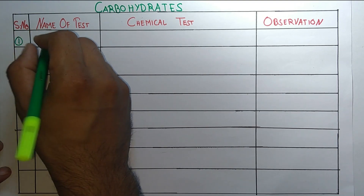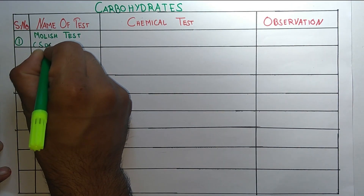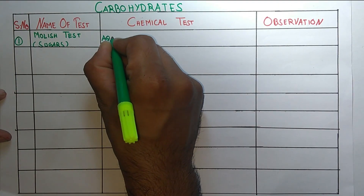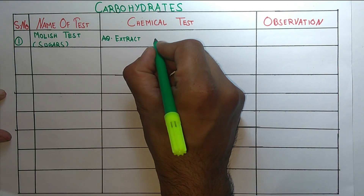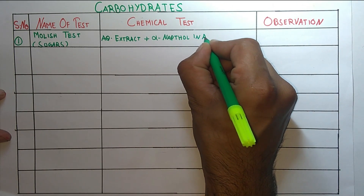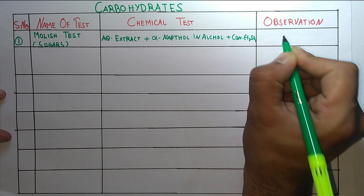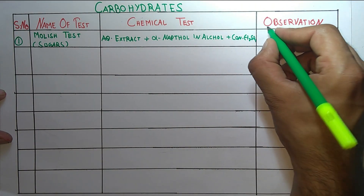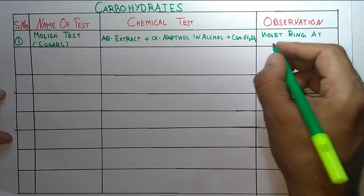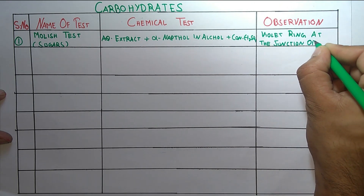The first test is the Molisch test, which is for general sugars. The procedure is: take the aqueous extract plus alpha-naphthol in alcohol plus concentrated H₂SO₄. The observation is that a violet ring is produced at the junction of the two liquids.